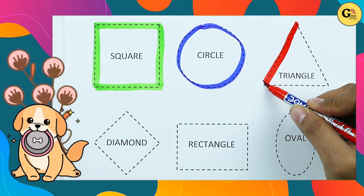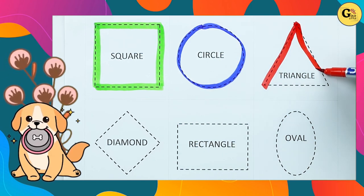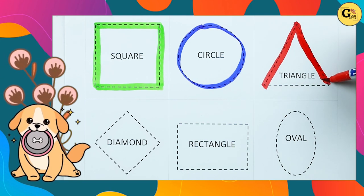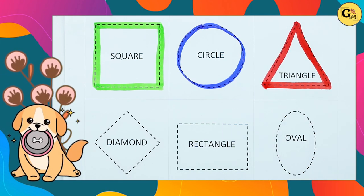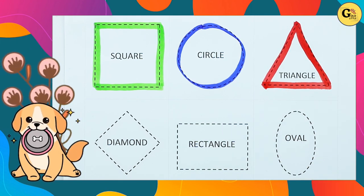One line, two line, two sliding lines. It's two sliding lines and one slipping line. It's a triangle with red color.